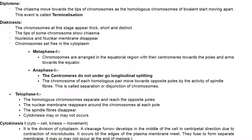In telophase I, homologous chromosomes separate and reach the opposite poles. Nuclear membrane reappears around the chromosomes at each pole, spindle fibers disappear, and cytokinesis may or may not occur. Cytokinesis I is the division of cytoplasm: a cleavage furrow develops in the middle of the cell in a centripetal direction due to contraction of microtubules, occurring until the edges of the plasma membrane meet and fuse to form a separate membrane.